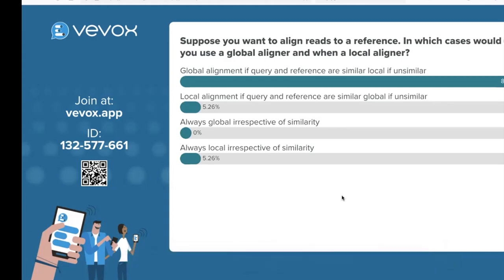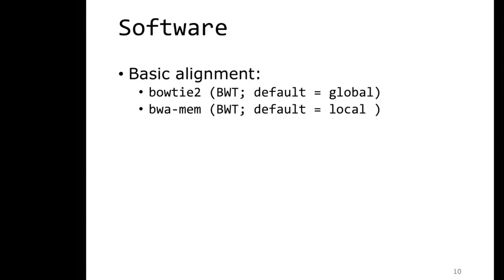The answer: global alignment is used when the query and reference are similar; local alignment is used when they are dissimilar. If you expect a lot of mismatches, insertions, or deletions — for example aligning reads to a related species — local alignment is often better. If the reference genome is very similar to your reads, global alignment is preferable, as soft clipping might lead to spurious alignments.